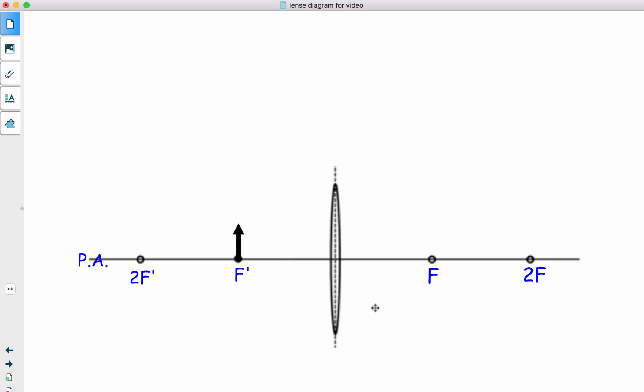We put our object right on F prime. Parallel. Through the focal point. Now, we can't really draw ray number 2, which would be through the focal point in parallel, simply because we are on the focal point. So, then we go to ray number 3. Which from the animation showed us. Go from the tip of the object. Exactly through the optic center of the lens.